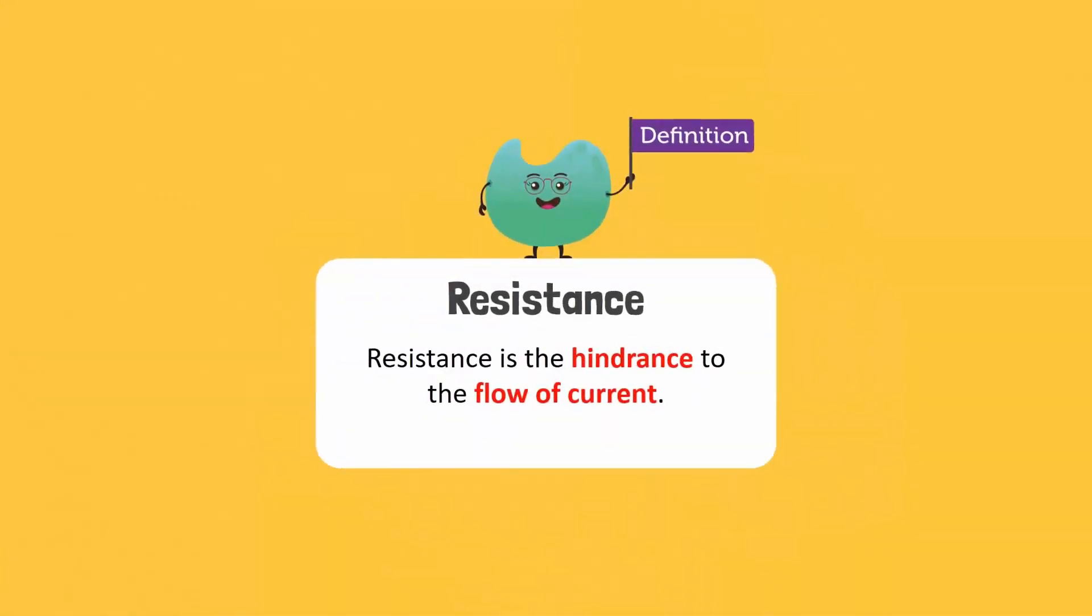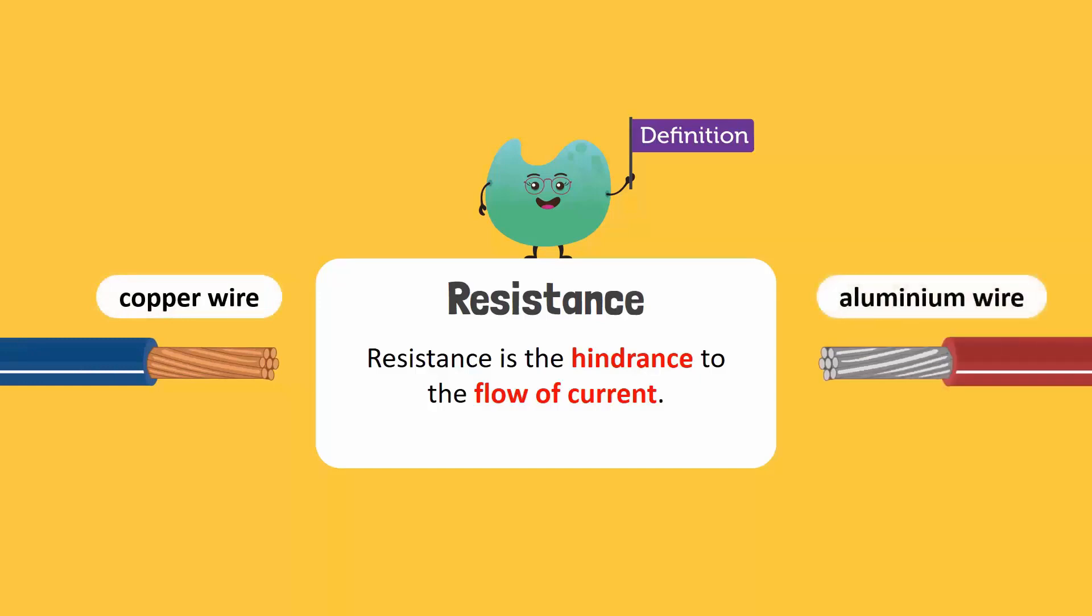Resistance is the hindrance to the flow of current. The resistance to the flow of current by each conductor is different. Current flow is better in a conductor like copper wire compared to aluminium wire. The unit of resistance is the ohm, represented by the Greek letter omega.